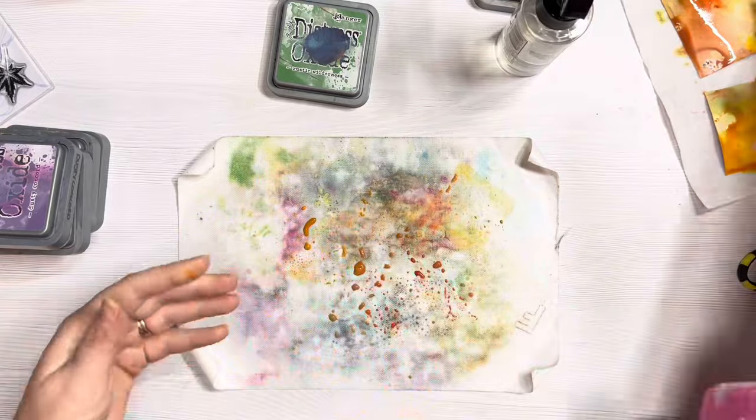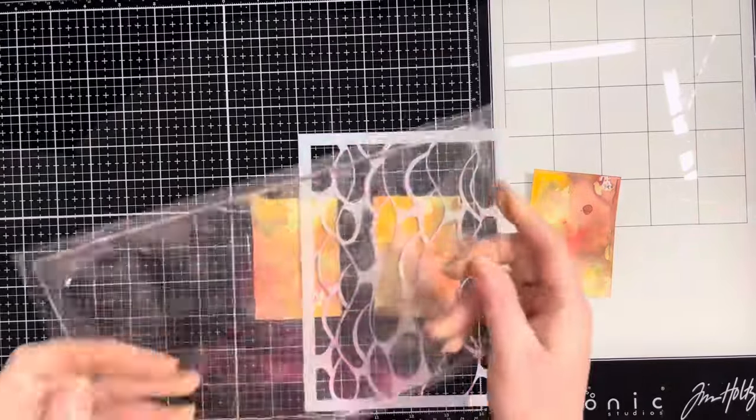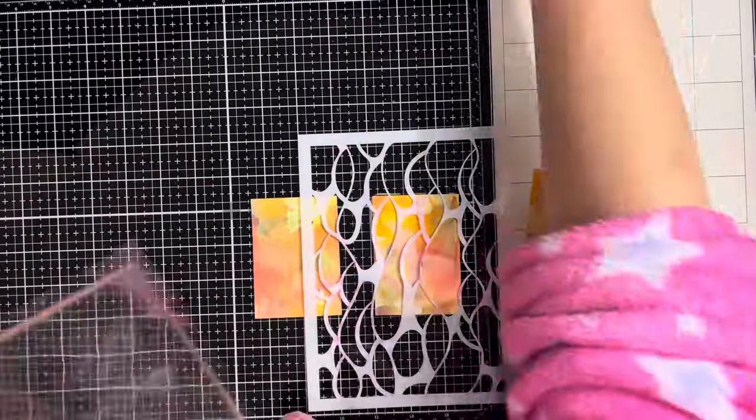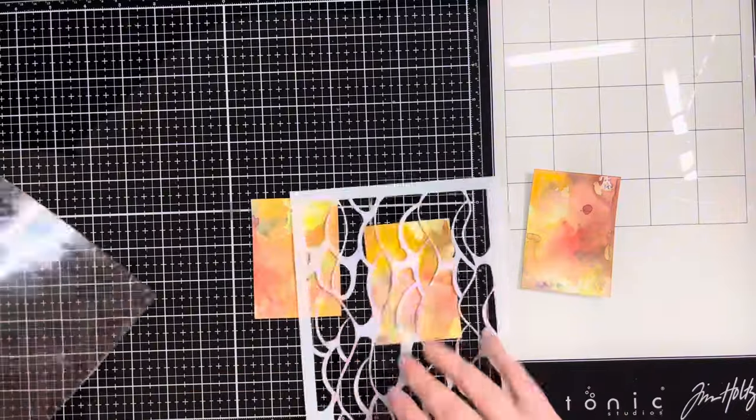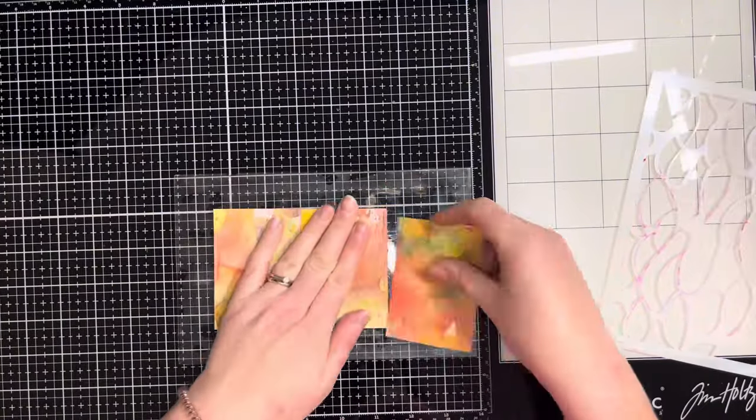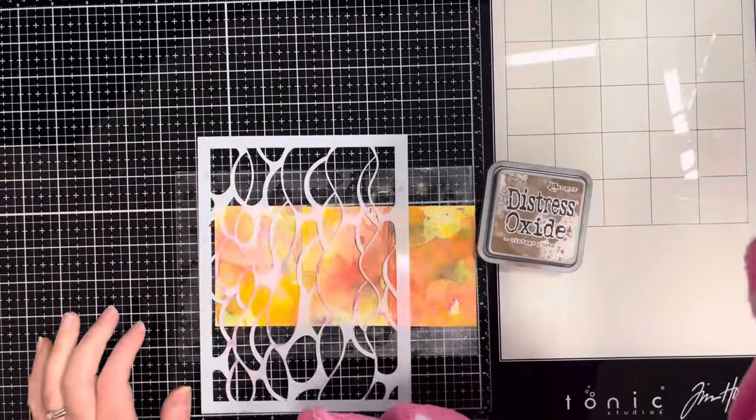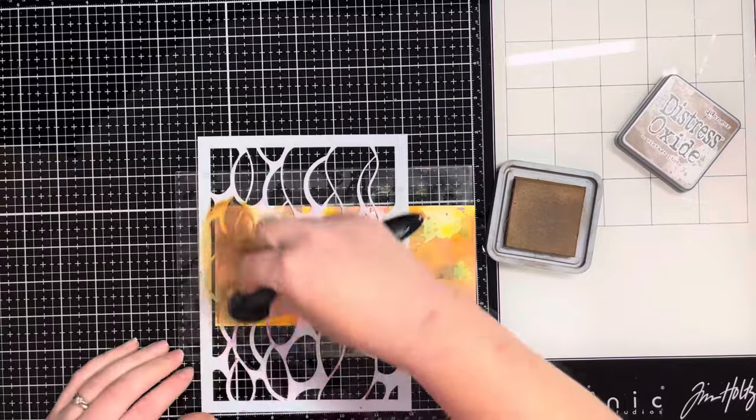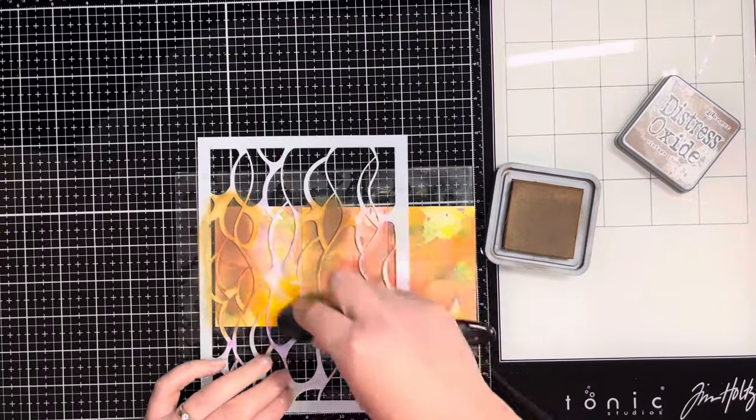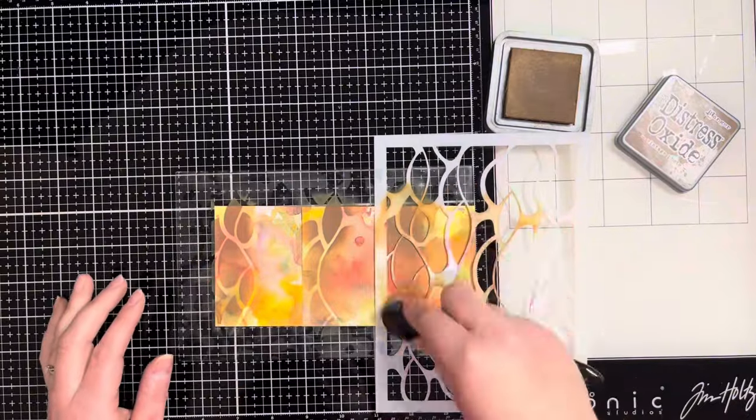Once they're all dry, I'm bringing in my glass mat to add stenciling and stamping. I'm bringing out my Waffle Flower Grip Mat and attaching it to the glass mat, then I can attach all the ATCs on it and use the stencil over it. The grip mat is great for holding your stencil in place while you're doing stenciling and ink blending. I'm really enjoying using it, it makes it a lot easier.